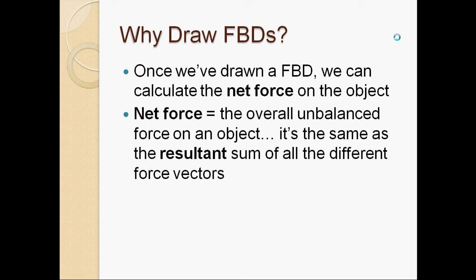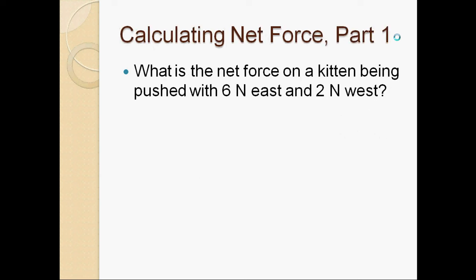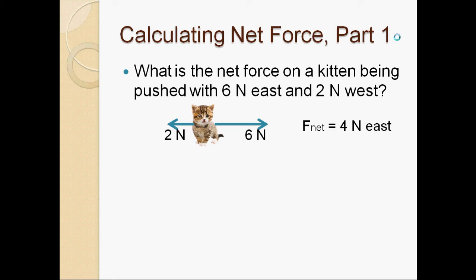For example, if we add up vectors like five newtons north, three newtons west, we're calculating the overall net force. Consider a kitten pushed with six newtons to the east and two newtons to the west. Drawing the free body diagram, we have one vector right and one left. Since they're both in the x direction, we subtract: six minus two gives a net force of four newtons to the east.